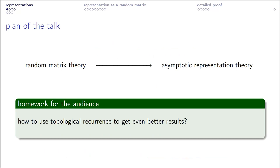My goal is to show you that some problems in asymptotic representation theory can in fact be approached from the random matrix perspective — that the viewpoint from random matrix theory might help. And I hope that during the coffee break the participants of the conference will explain to me how topological recursion might make the results we see today even better.